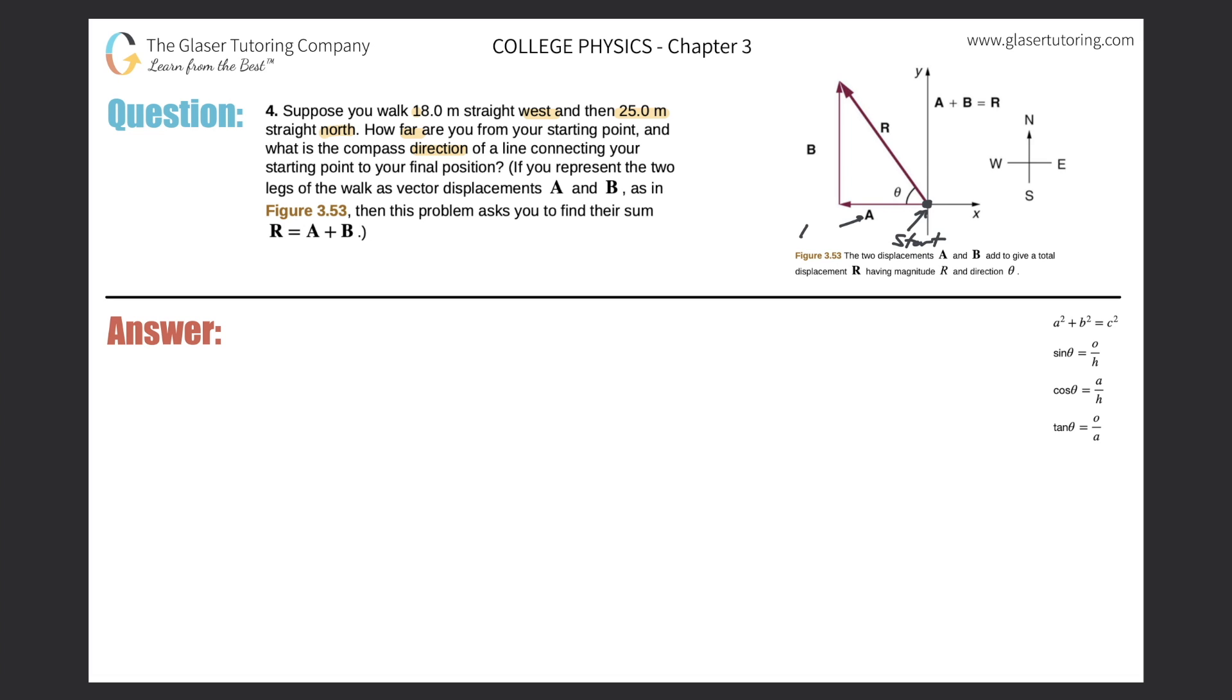Then from the starting point we walk 18 meters straight west, so it looks like letter A in this diagram will represent 18 meters because we moved west. Then it says we're going to walk 25 meters north, so it looks like B in the picture will be 25.0 meters.